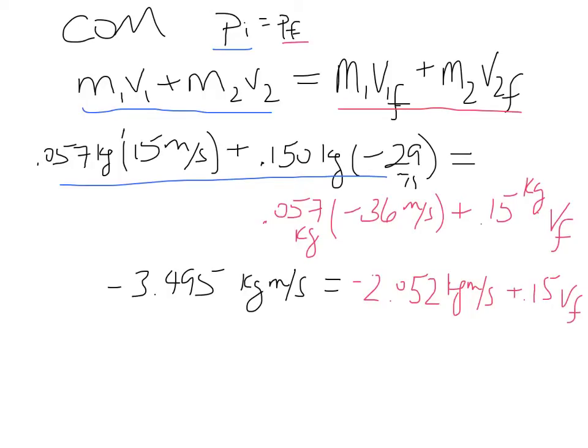So solving this for V_f, we just add the 2.02 to the other side, and so V_f equals negative 9.62 meters per second.